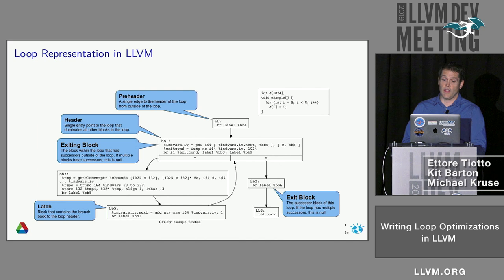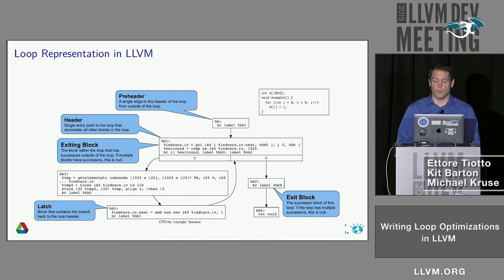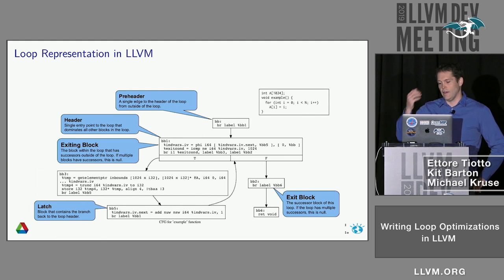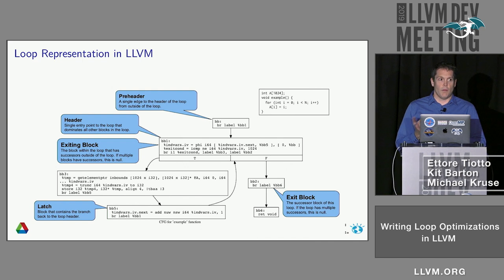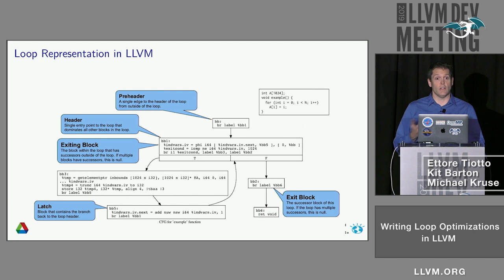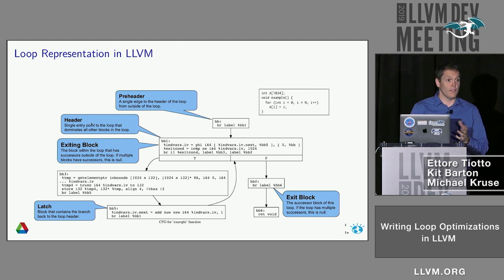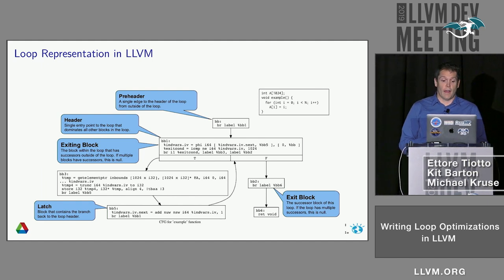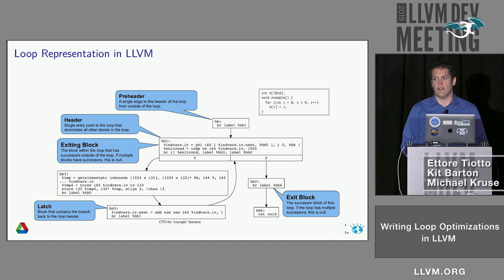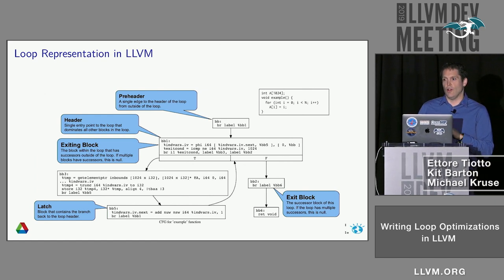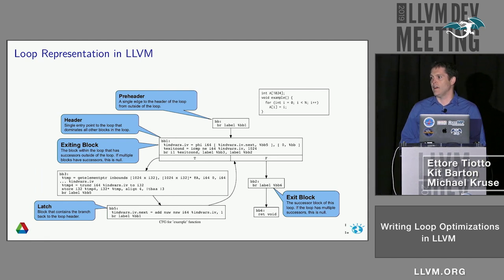The loop representation in LLVM has several different terminologies or parts of the loop that we identify. We have the preheader, which is a block not considered part of the loop — it's outside the loop but dominates the header block. Then you have the header, which is the single entry point for the loop and dominates all the other blocks inside the loop. We have the exiting and exit blocks. The exiting blocks are inside the loop and branch outside; the exit blocks are outside the loop and are branched to by blocks inside the loop.